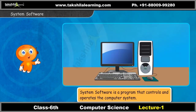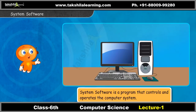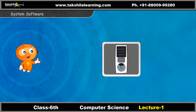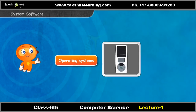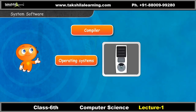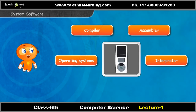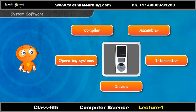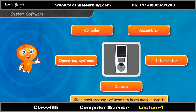System software is a program that controls and operates the computer system. System software is classified into operating systems, compiler, assembler, interpreter, and drivers. Click each system software to know more about it.